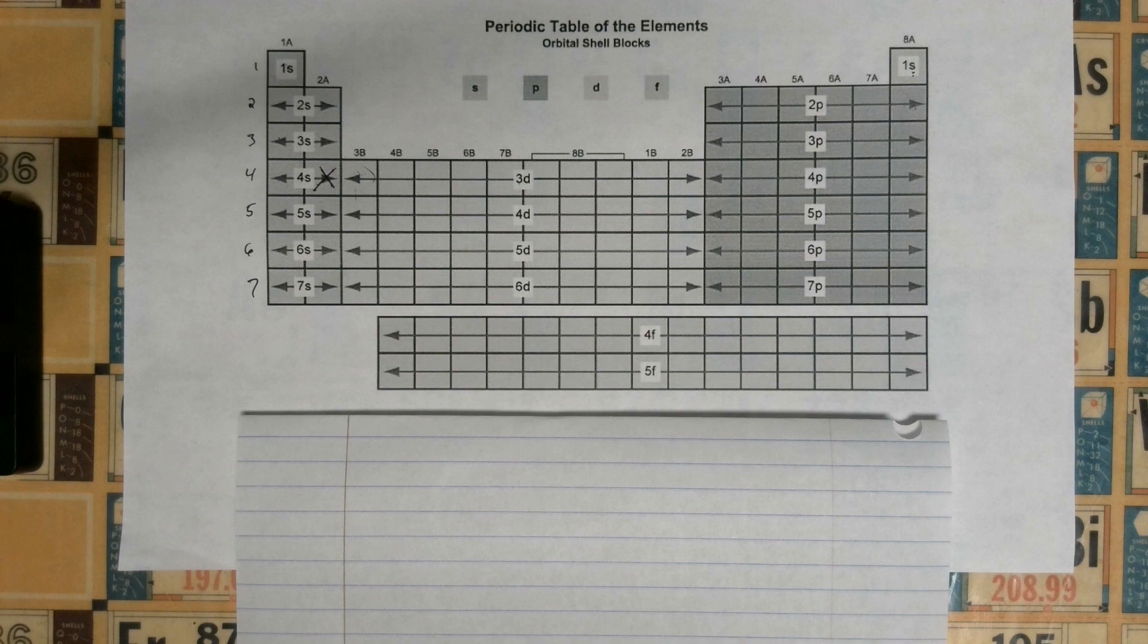Okay, so we're going to talk about if we have an element that goes into the F block, how do we write that electron configuration, and then we're also going to talk about abbreviated electron configuration.